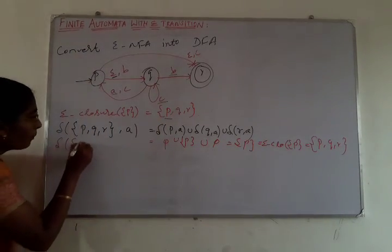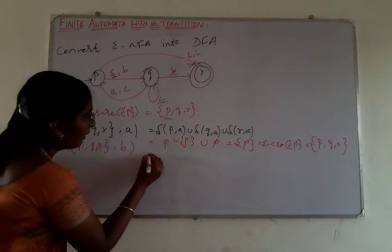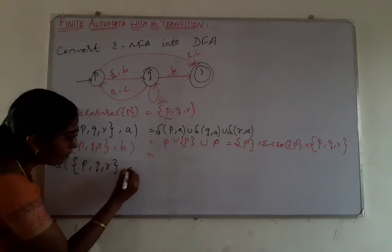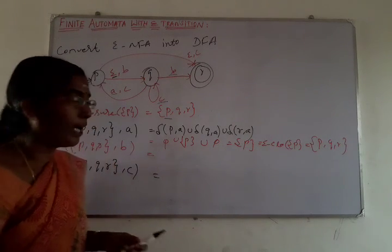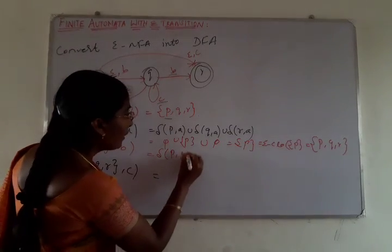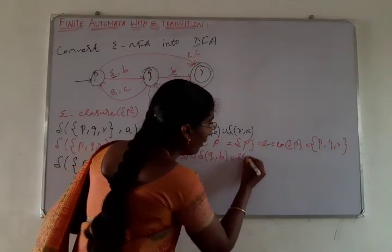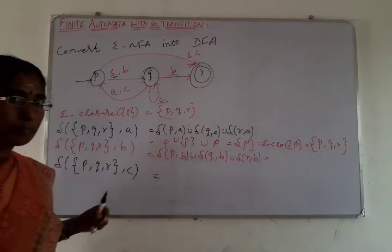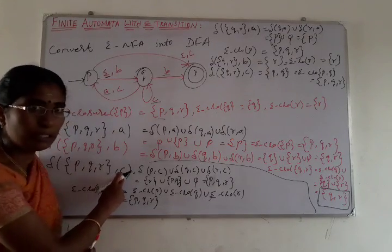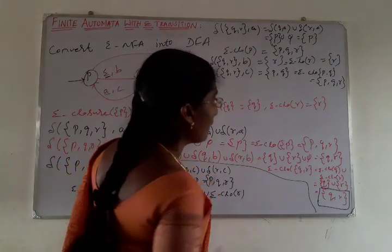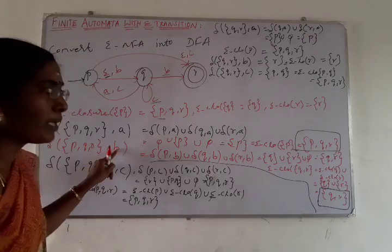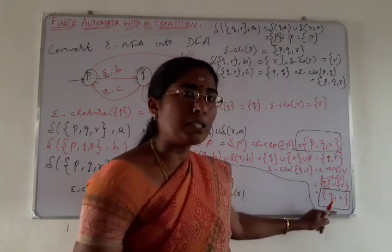Next, we extend state PQR for input symbol B: δ(P, B) union δ(Q, B) union δ(R, B). After computing and taking the epsilon closure, PQR on input B transitions to state QR. State QR is a different transition result and is considered a new state. We will need to extend state QR for input symbols A, B, and C.